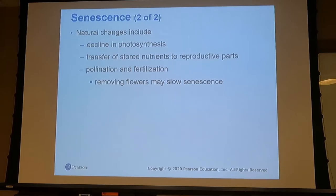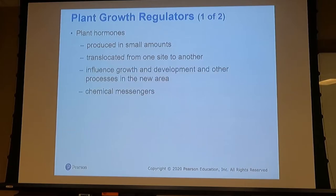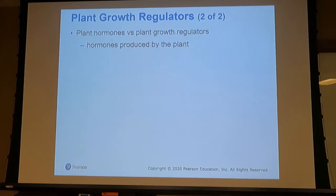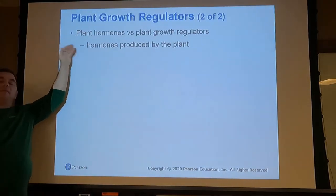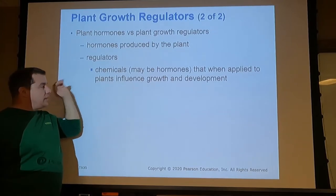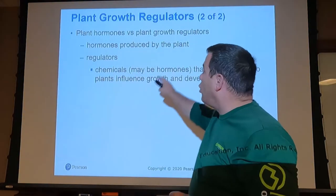Senescence can also happen after pollination and fertilization due to a change in hormones. Plant hormones are produced in small amounts and influence growth, development, and processes in other areas — they're the plant's chemical messengers. The primary difference between a plant hormone and a plant growth regulator is that hormones are actually produced by the plant, while plant growth regulators are synthetic chemicals made to mimic those natural hormones.